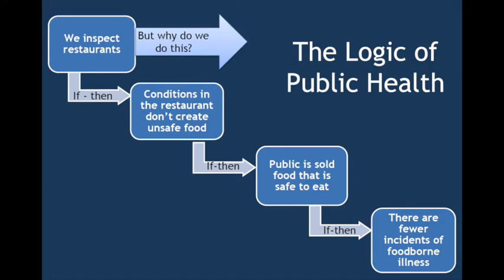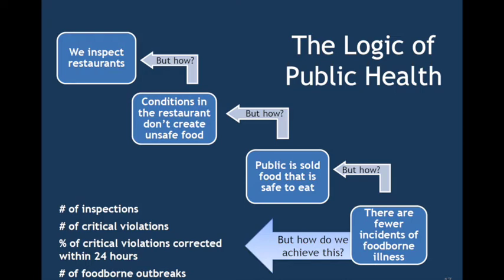Now let's revisit the same model and ask 'but how?' Starting from the bottom — there are fewer incidents of foodborne illnesses, but how do we achieve this? How do we know the public is sold food that is safe to eat? How do we know conditions in restaurants don't create unsafe food? And how do we inspect restaurants? At the bottom left, there are indicators: we can initiate a specific number of inspections during a month, understand the critical number of violations, examine if a percentage of critical violations are corrected within 24 hours to prevent a foodborne illness outbreak, and examine the number of foodborne outbreaks occurring in a location.